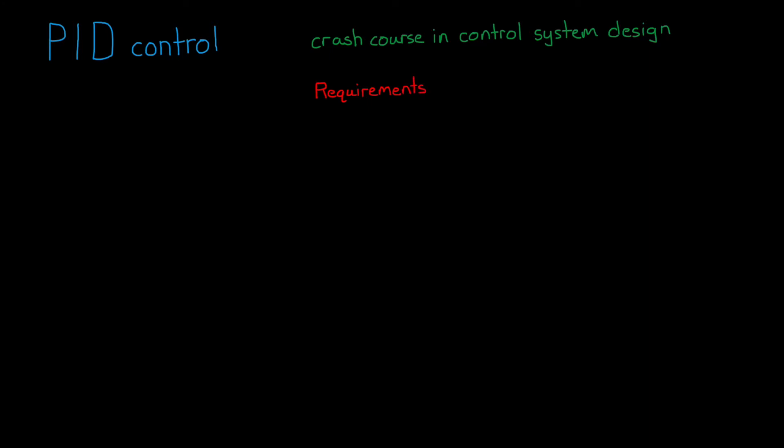This is what you want your system to do, and it's how you know when the design is good enough and you can stop fiddling around with it. Requirements usually boil down to defining how fast and accurate you want the control to be and how stable you want the system to be. Specifically, they can be defined by how you want the system to behave over time.